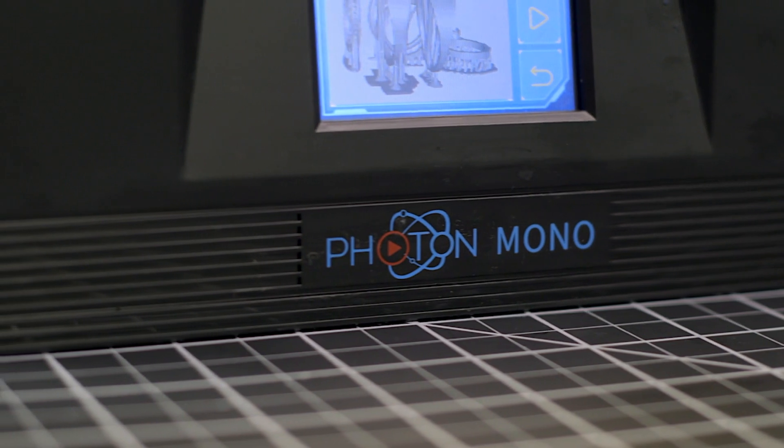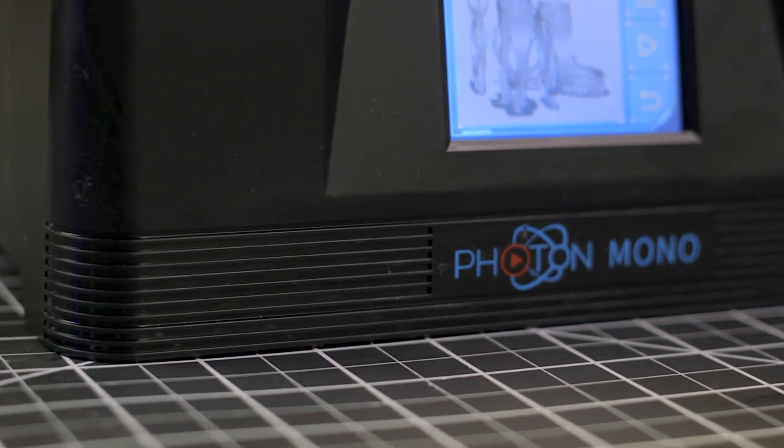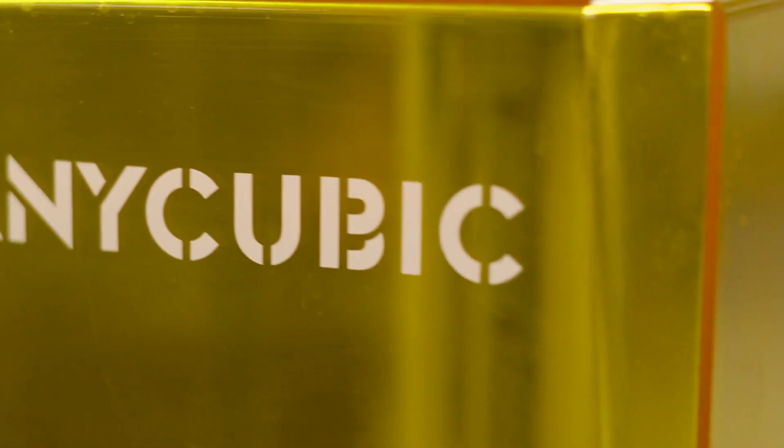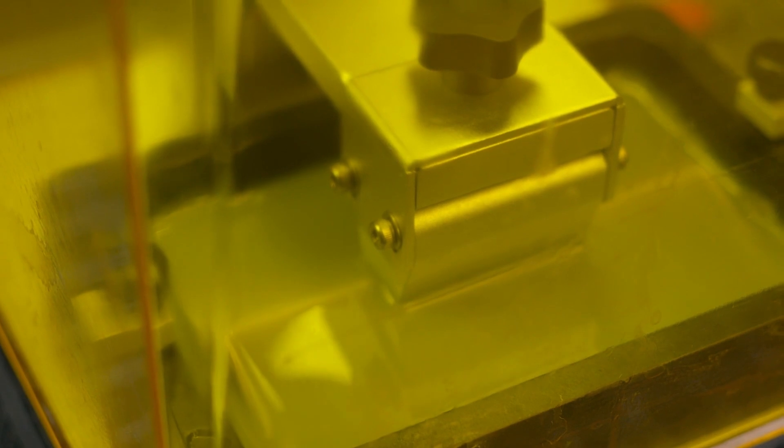Not only have there been improvements in performance, there have been changes made for better daily use and maintenance. The UV blocking top cover blocks out 99.95% of UV light, protecting both your eyes from the intense UV LED matrix and protecting the uncured resin in the vat of the Photon Mono.